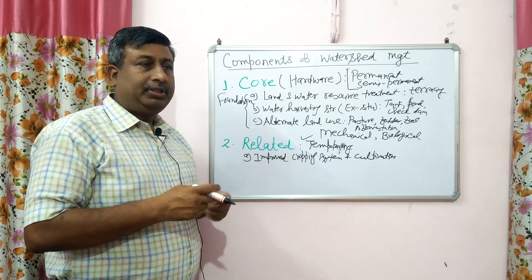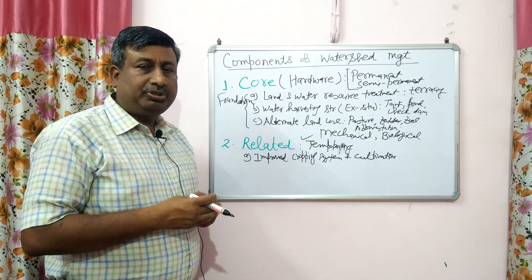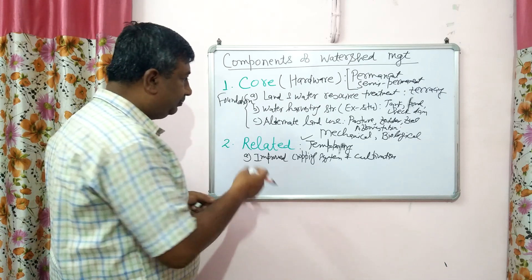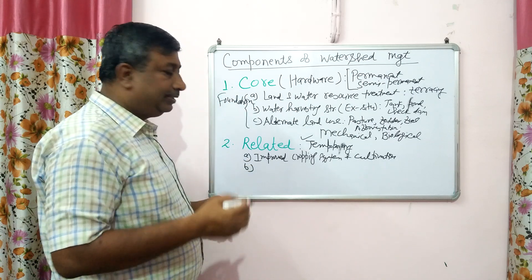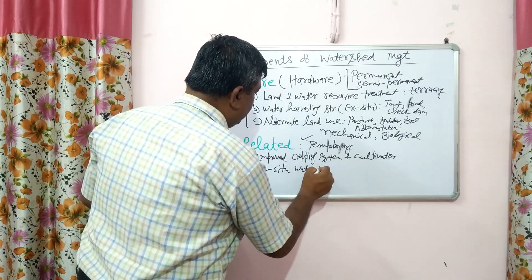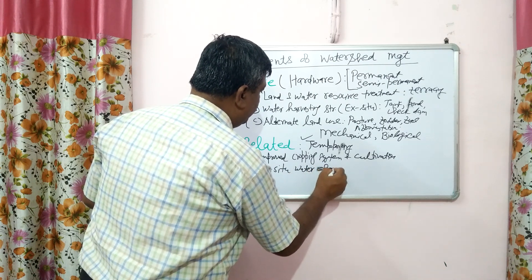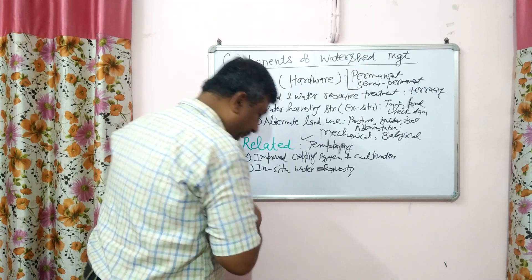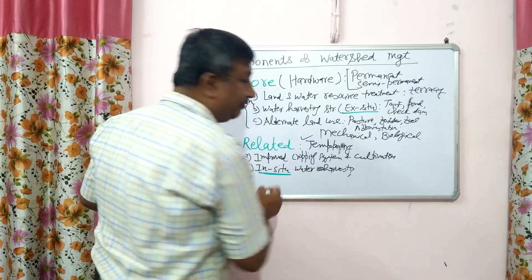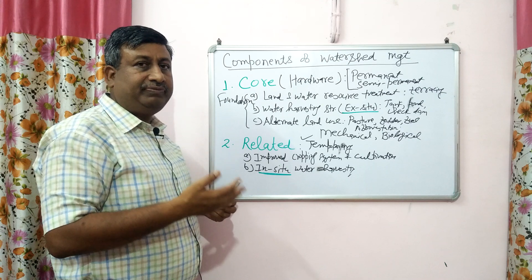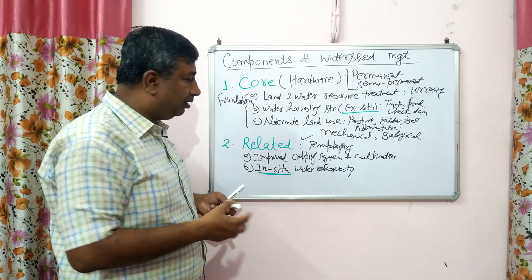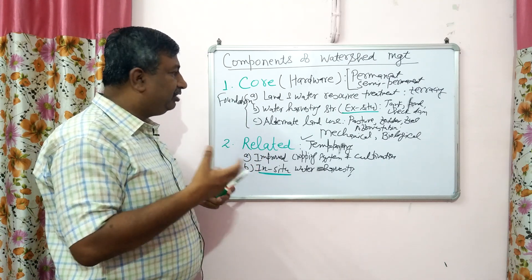Related components are mainly concerned with the utilization of stored soil moisture and resources to enhance productivity and profit. The next related practice is in-situ water harvesting. In contrast, ex-situ water harvesting requires developing ponds, tanks, and dams — meaning engineering structures are required and cost is involved.